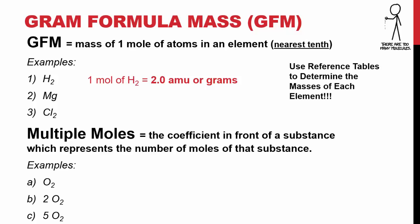For magnesium, you look it up, it comes out to be 24.3 atomic mass units, or 24.3 grams for every 1 mole. For chlorine, for 1 mole, you're going to have 71.0 because each chlorine atom has a mass of 35.5 atomic mass units.